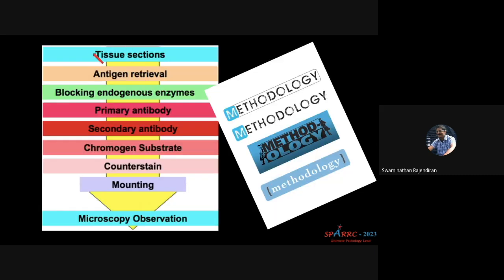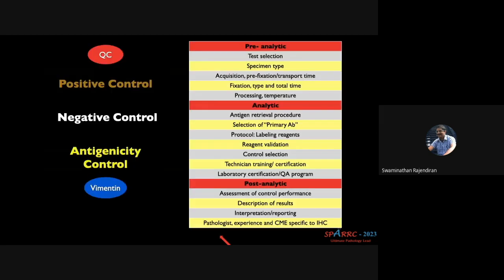Briefly, we take tissue sections, unmask the antigen, and block endogenous activity. We use the primary antibody to bind with the antigen, then highlight it with a secondary antibody coupled with a chromogen substrate, then counter-stain, mount it, and see it under the microscope. Depending on the substrate chromogen used, the result will be brown or red.